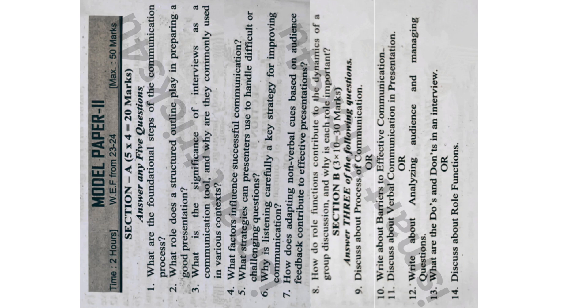Model Paper 2, Section B — essay questions. Ninth question: Discuss about the process of communication. Tenth question: Write about barriers to effective communication. Eleventh question: Discuss about verbal communication in presentations. Twelfth question: Write about analyzing audience and managing questions. Thirteenth question: What are the do's and don'ts in an interview? Fourteenth question: Discuss about role functions. With internal choice, three essay questions are required.